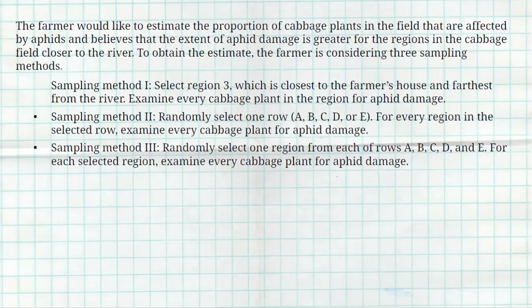All right, sampling method number two, he's going to randomly select one row, A, B, C, D. He's going to select one of the rows and every region in that selected row, examine every cabbage plant for aphid damage. Sampling method three is randomly select one region from each of the rows, A, B, C, D, and E. For each selected region, examine every cabbage plant for aphid damage.